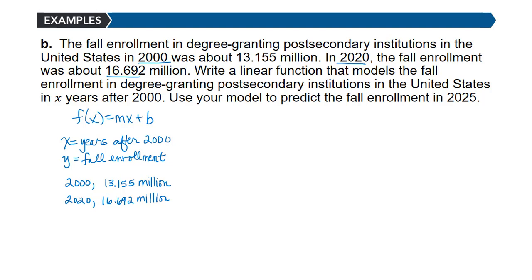And then 2020, that's 20 years after 2000, so that's an x value of 20. And then 16.692. So now we have a problem where we need to write the equation of the line that goes through these two points.